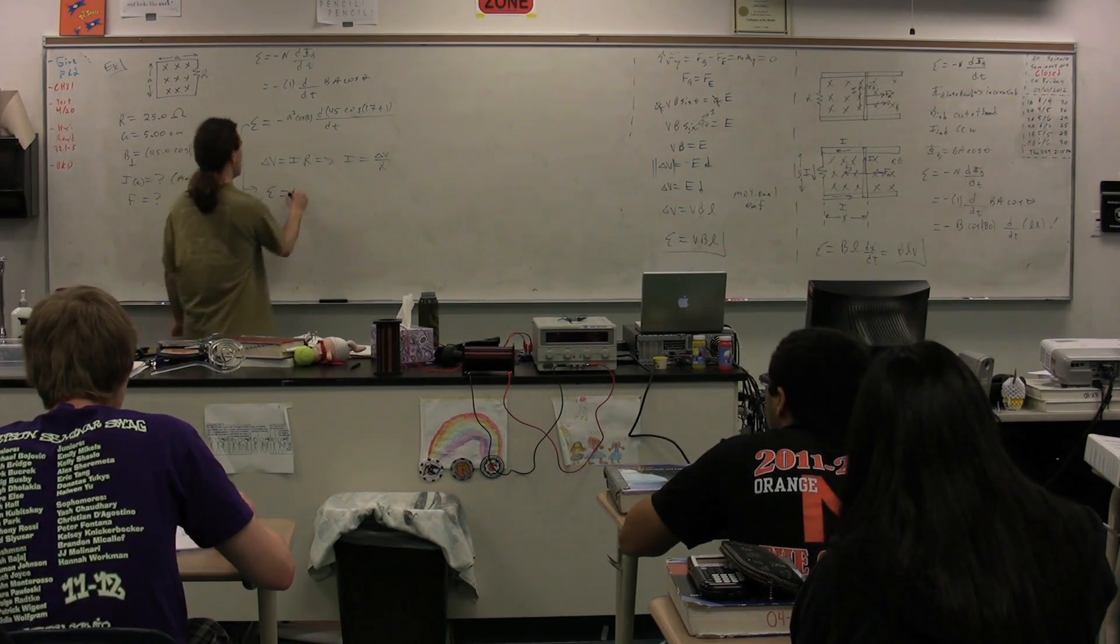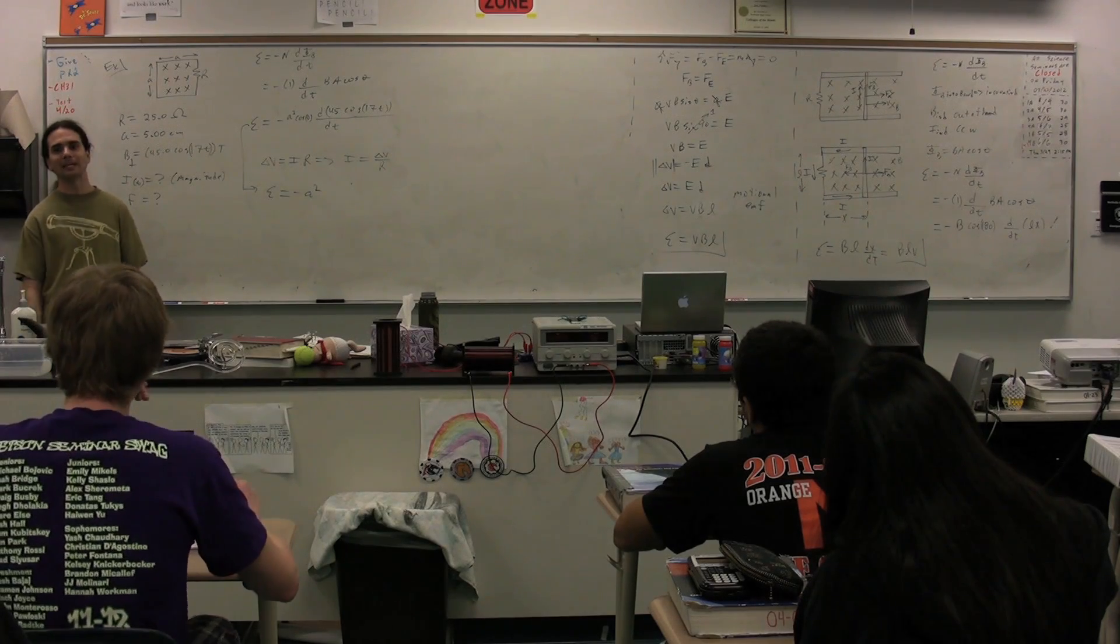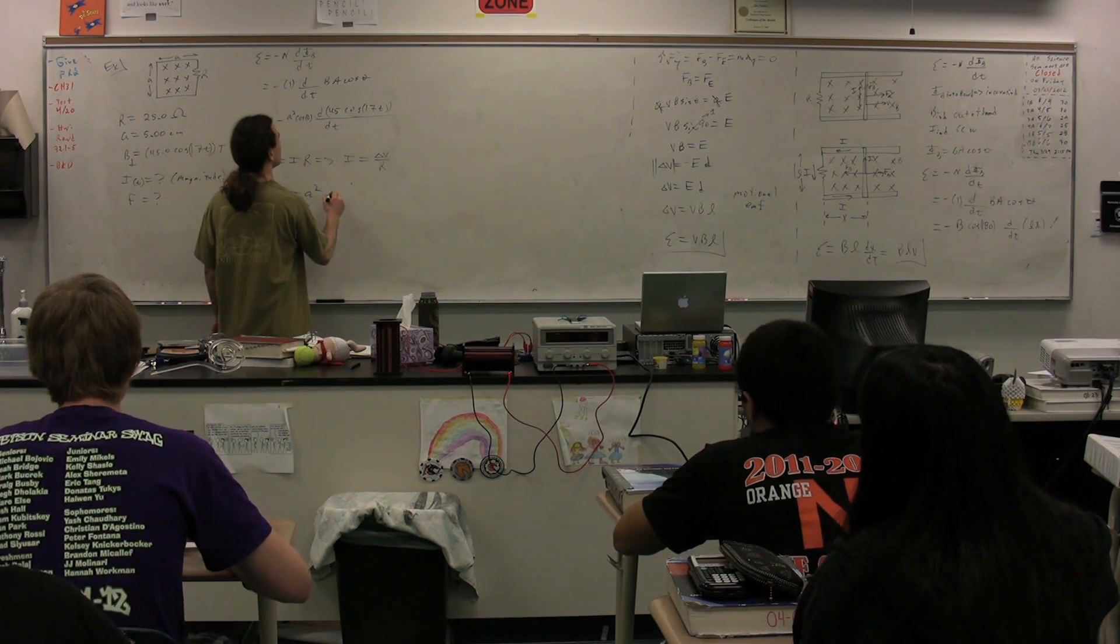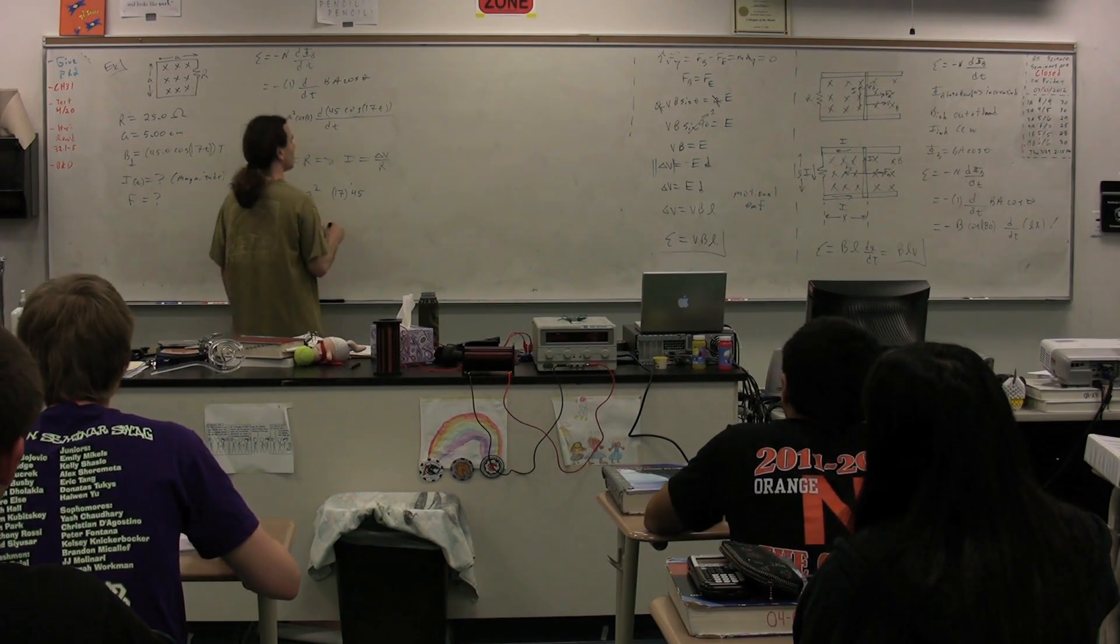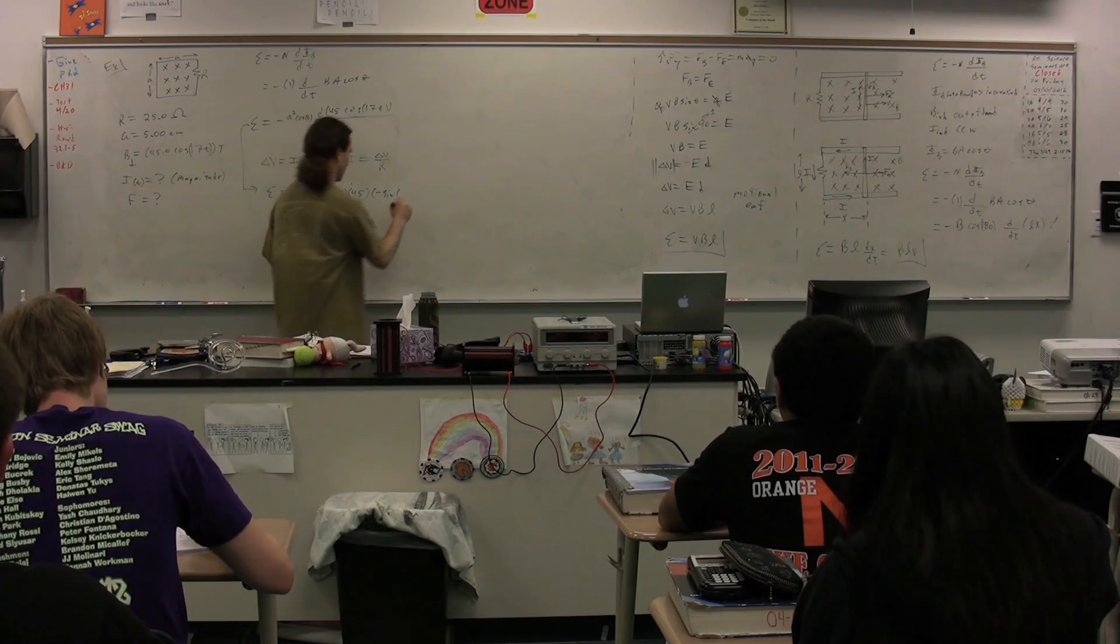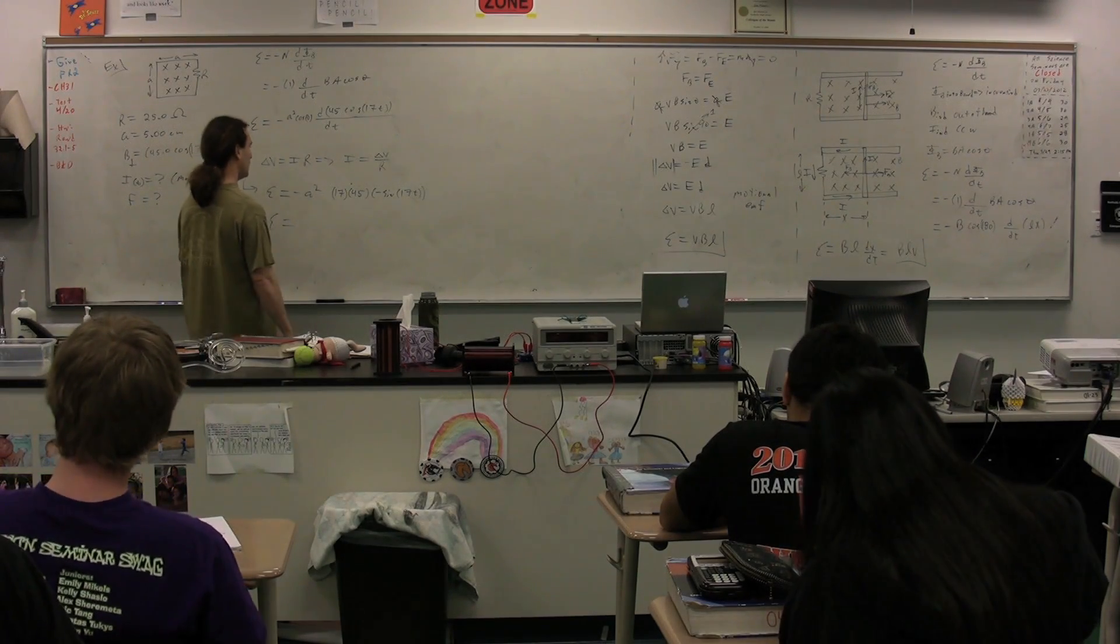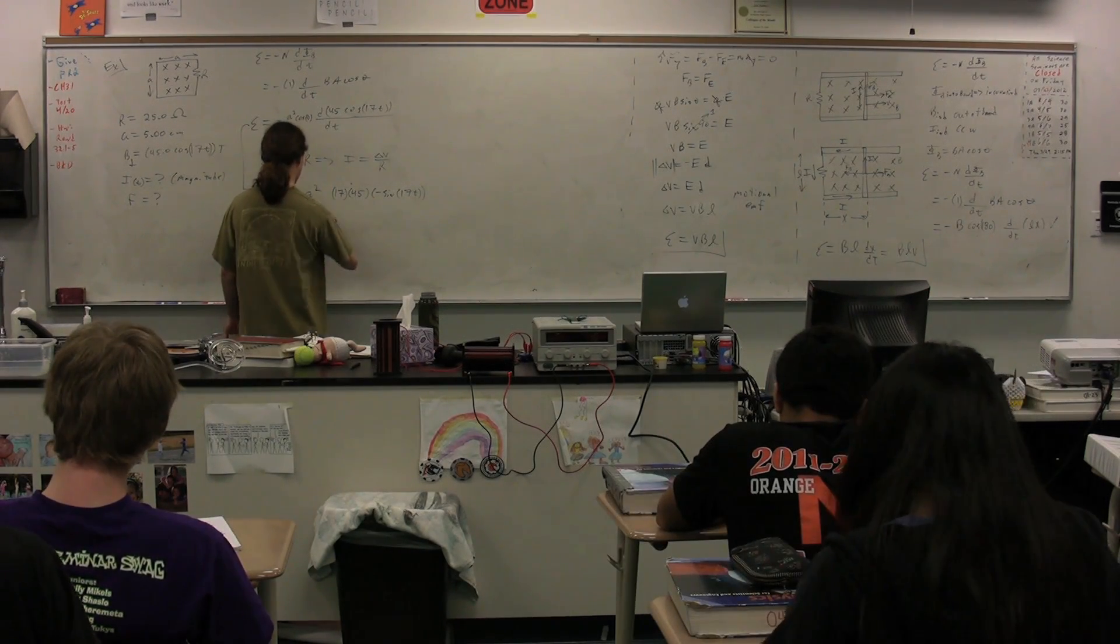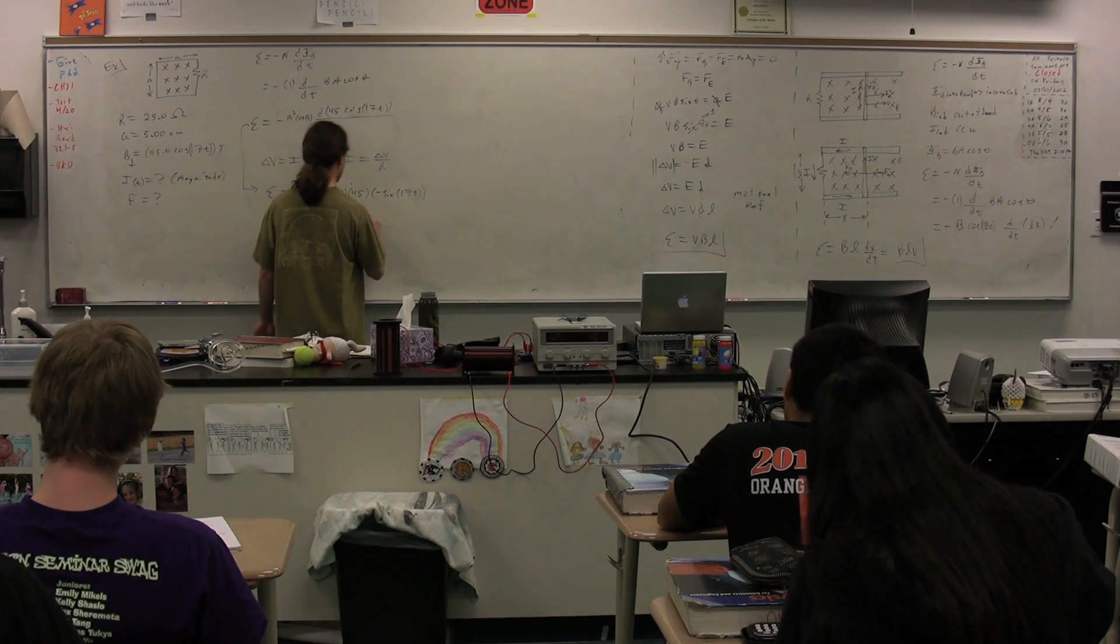So we could finish this. The EMF is equal to negative A squared derivative as a function of time. Now, take the derivative, please, as a function of time of 45 cosine 17t. Sierra? Okay. Well, we're going to take the derivative of the inside 17t, which is 17, and you multiply that. You put in the 45, and then it should be negative sine of 17t. Great. Let's see. What's 17 times 45, please? 765. 765 A squared, we have two negatives, so it's basically positive, times the sine of 17t.